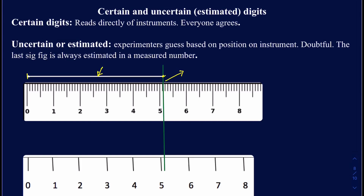The first ruler goes from 0 to 8, and so does the second ruler — both are measuring centimeters. However, in between each centimeter on the first ruler, there are 10 small markings, which measure the millimeters. So the smallest measurement you can take from the first ruler is 0.1 centimeters, or one millimeter.